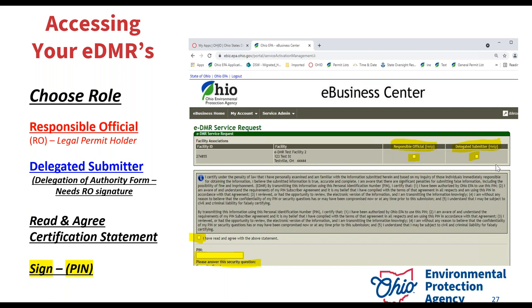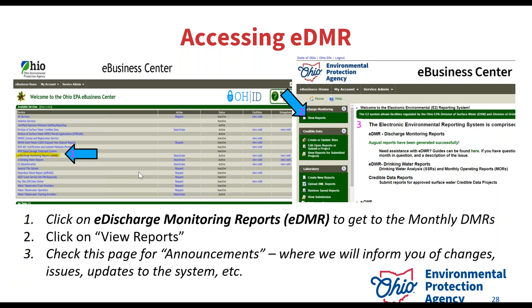You just send the form to the RO, the RO gets it initialed and signed, and then they email it back to me so I can approve you. Once approved — whether through the delegation form or instant access — you'll get an auto email saying you've been approved, and then you'll be able to click on the actual EDMR service.